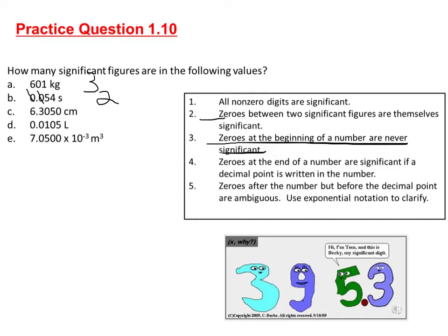The zero at the end—zeros at the end of a number are significant if a decimal point is written in the number. There is a decimal point there, so this one has five significant figures.